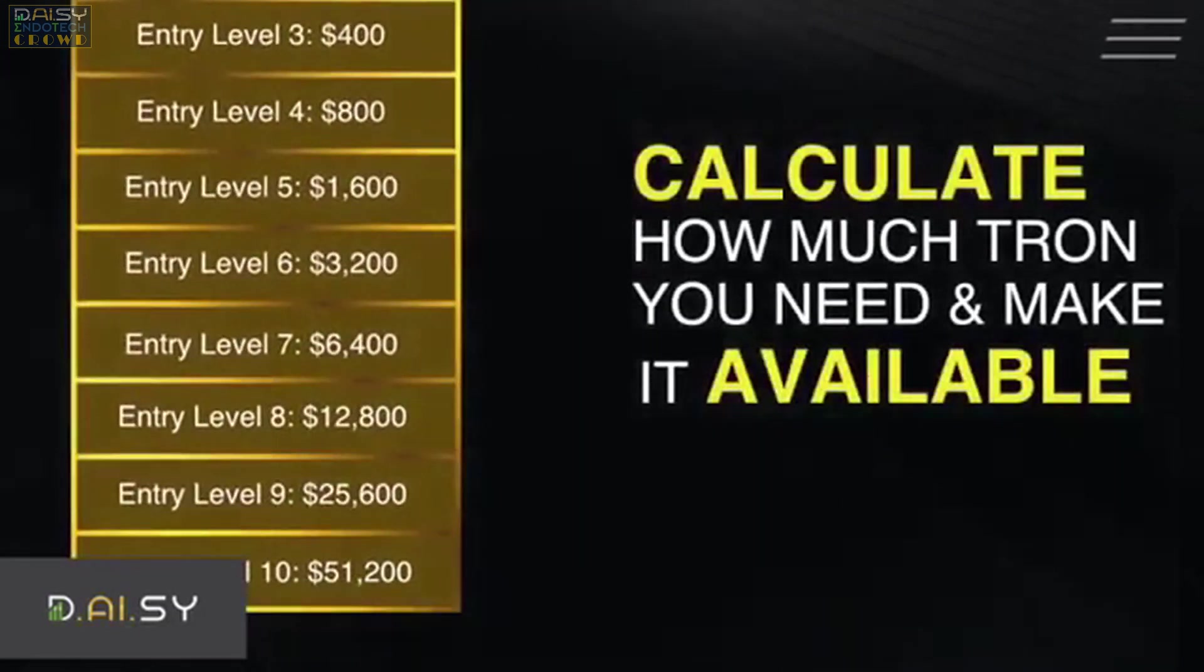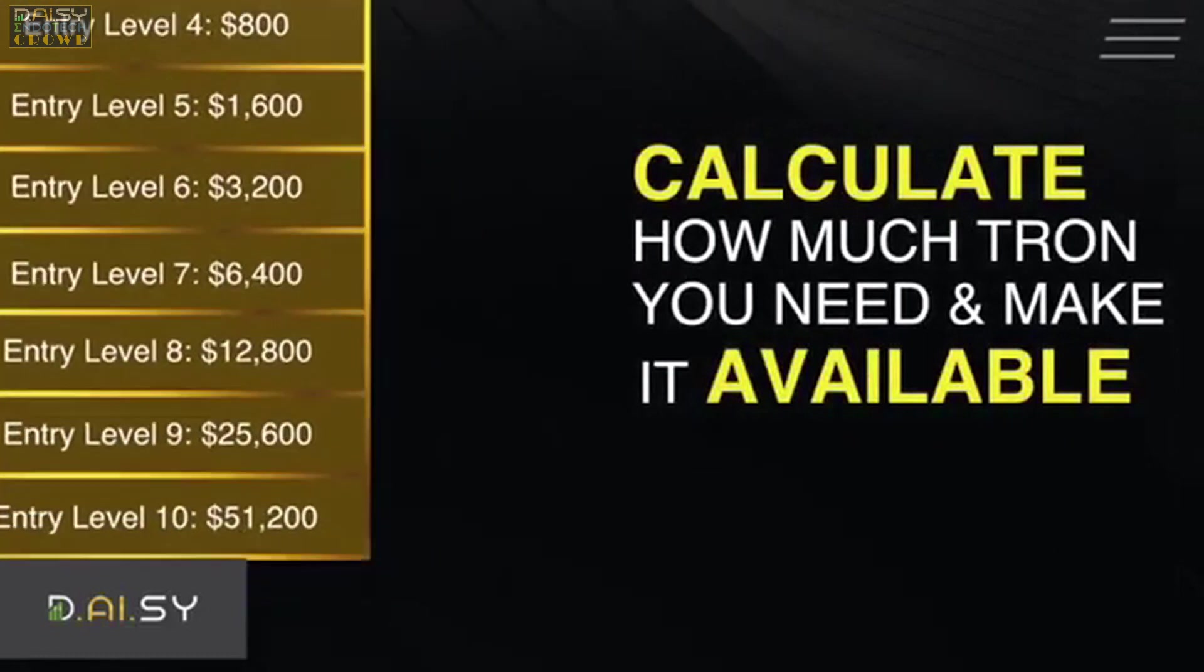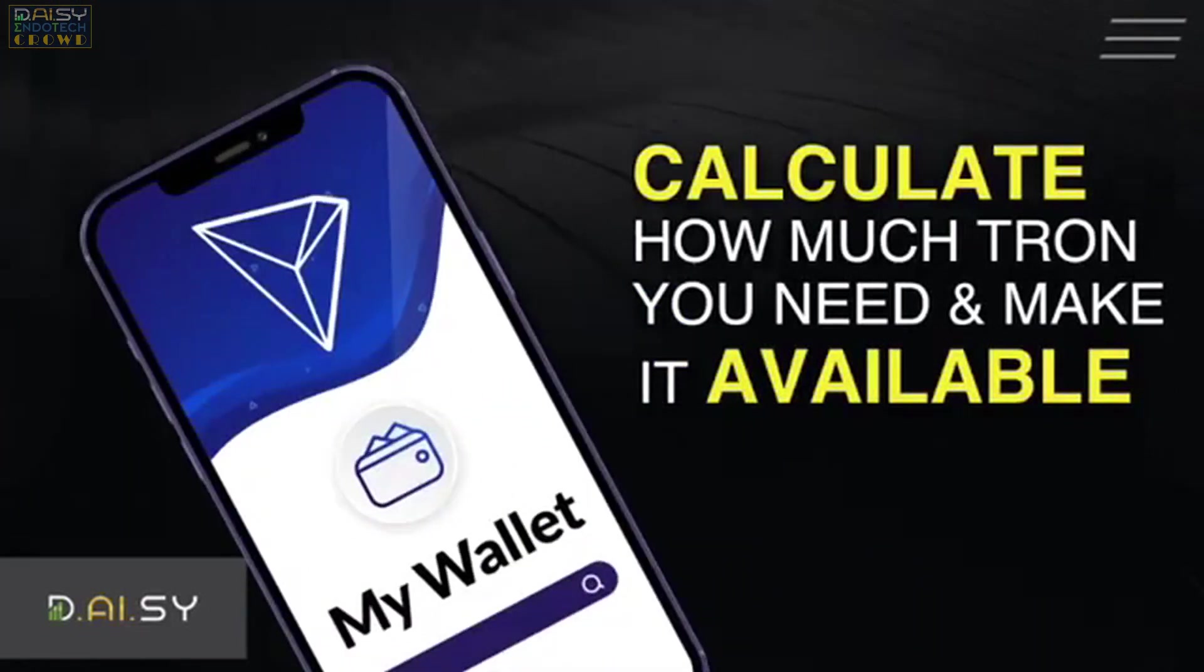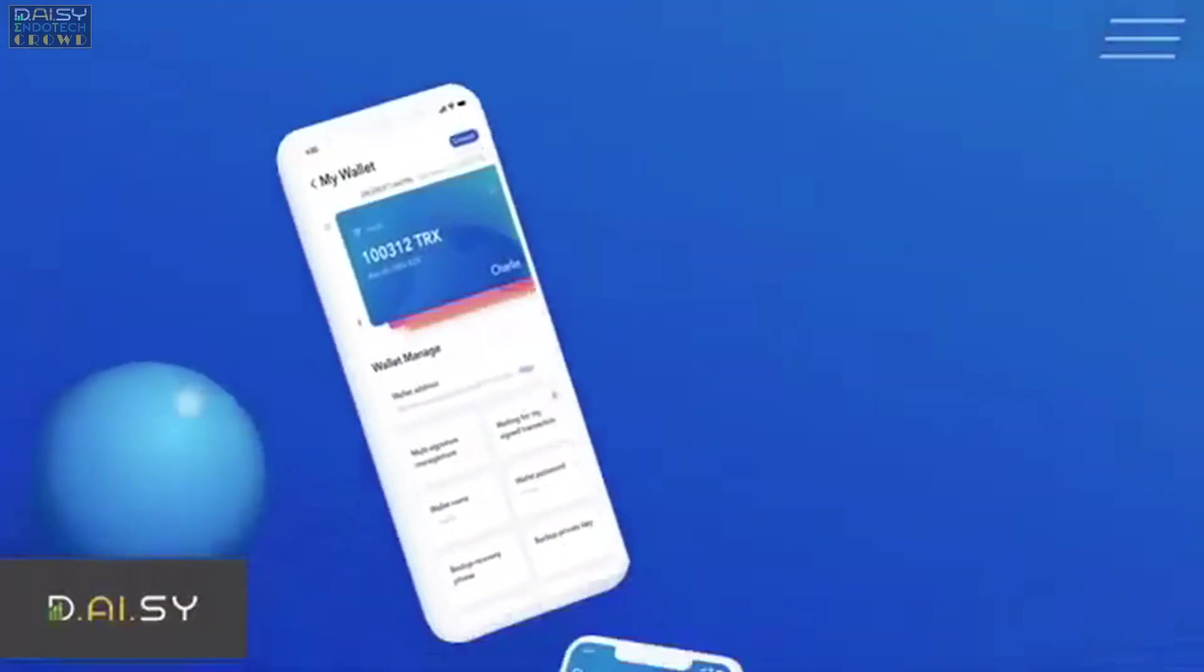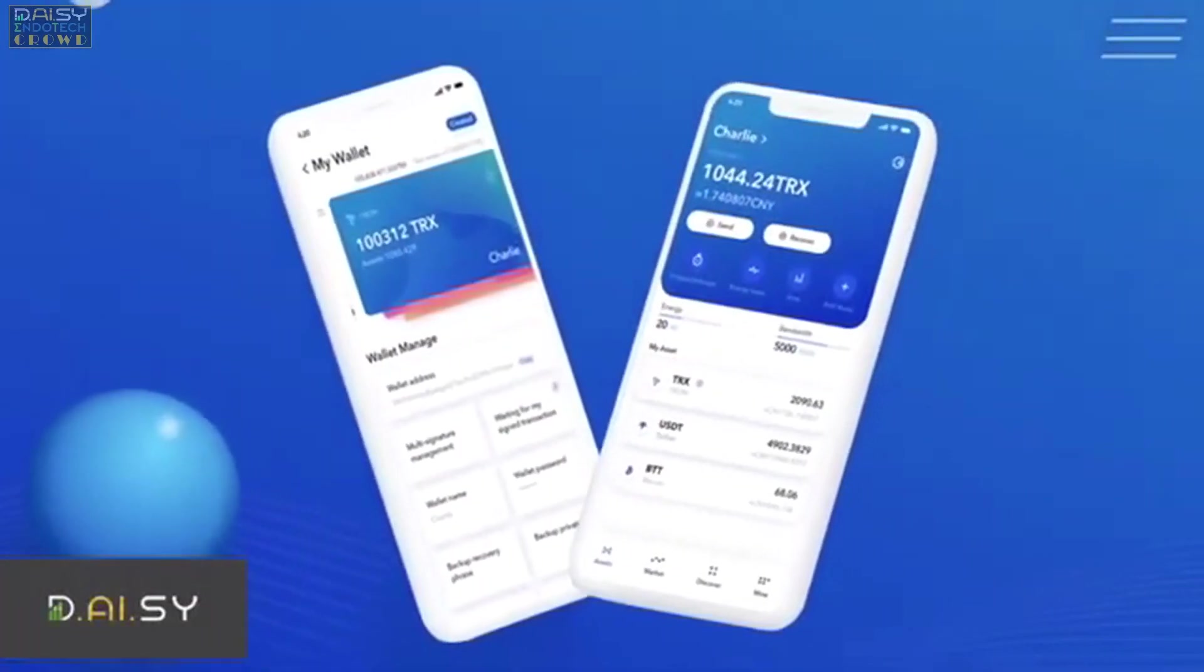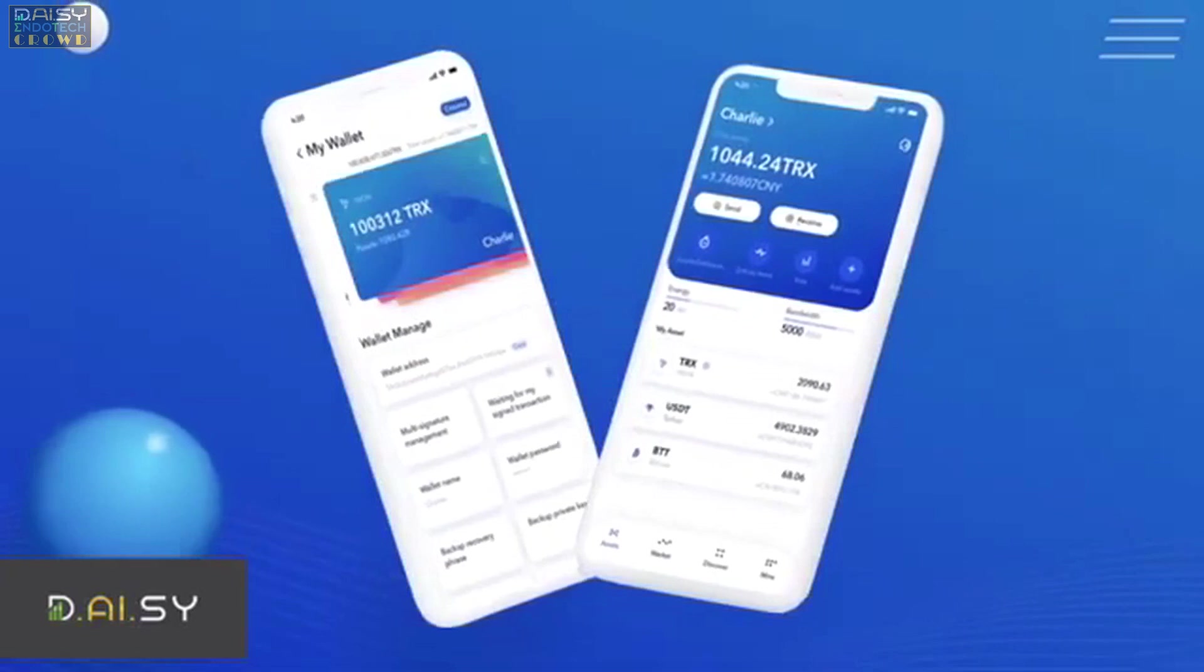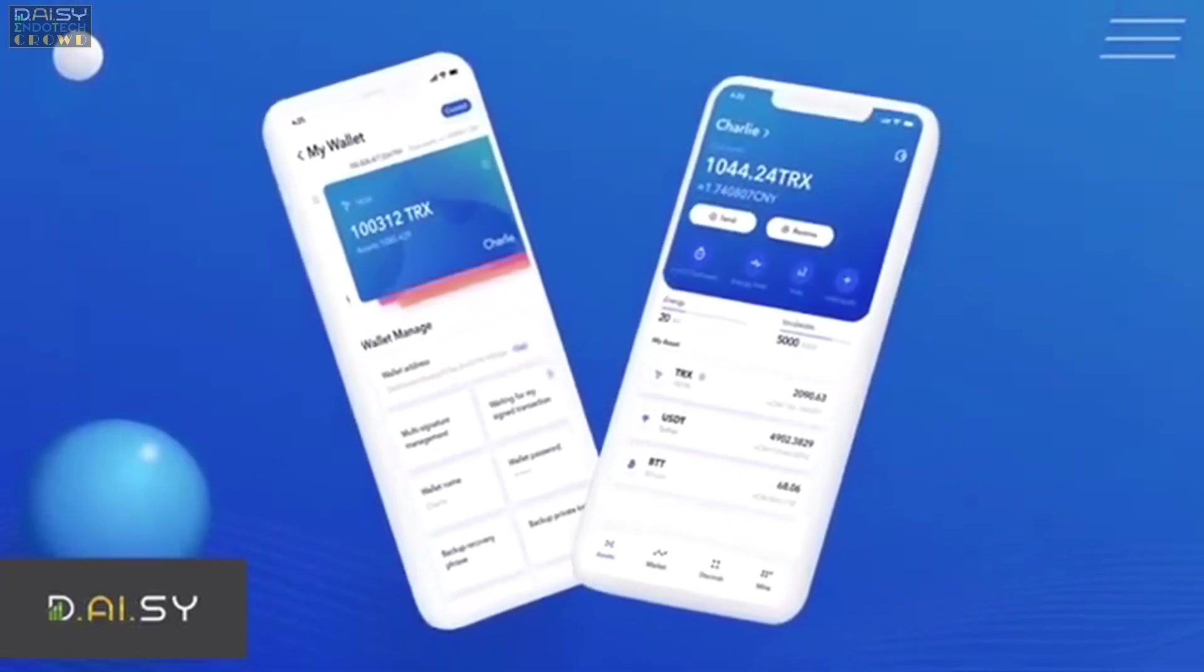Calculate how much USDT you need to have to participate in tiers 2 through 10 that you desire and make it available in your wallet. Make sure you have approximately 30 to 40 Trons available per transaction for the transaction fees. Then link directly into the TronLink app or browser to sign up to Daisy and purchase a minimum entry level 1 Daisy crowdfund and secure your spot in the matrix.